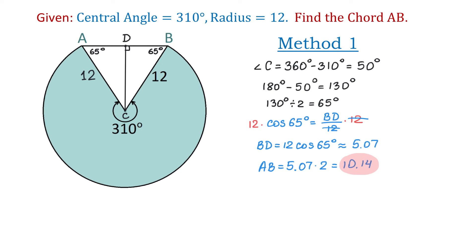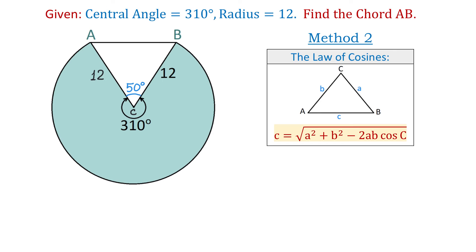And now let's see the second method. With this method we still have the isosceles triangle ACB where this side is 12 units and this one is also 12 units and angle C is 50 degrees. To find the side AB of this triangle we will use the law of cosines.